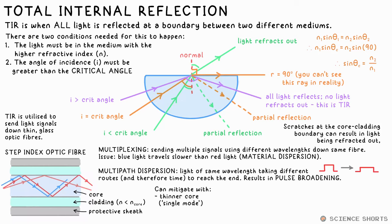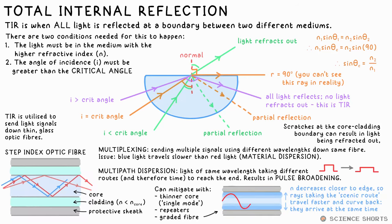Number one, make the fiber really thin. The thinner it is, the less light will diverge. Number two, put repeaters in every so often to retransmit the slightly broadened pulses as brand new ones. The final clever idea is to use graded index fibers.